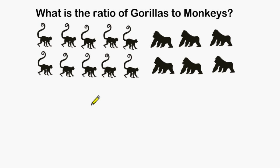In this problem we have to figure out what the ratio is of gorillas to monkeys. Notice with the problem they state the word gorillas first and secondly they state the word monkeys. You have to count the object that is given first in the ratio.